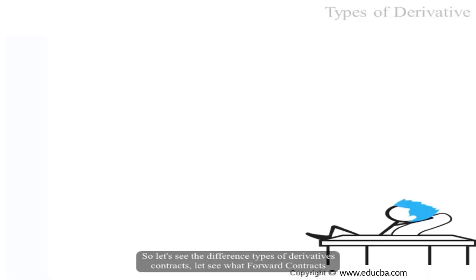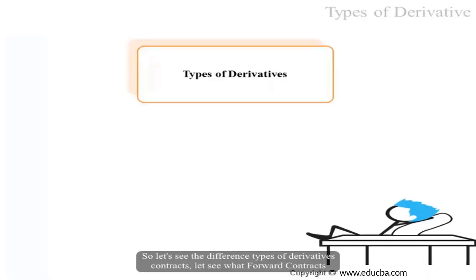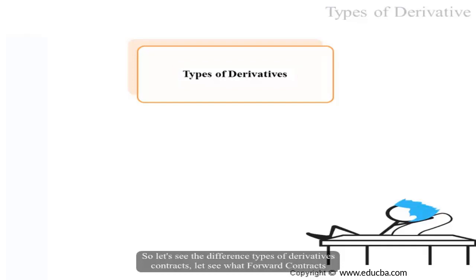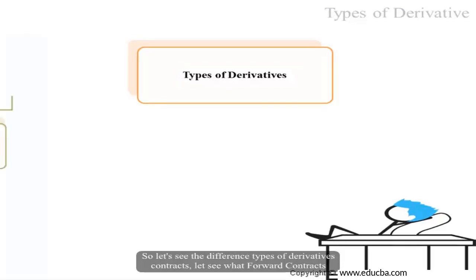Let's see the different types of derivative contracts, starting with what is a forward contract.